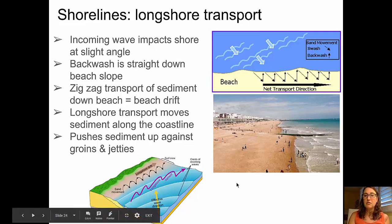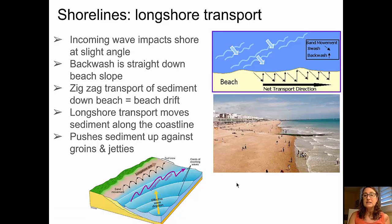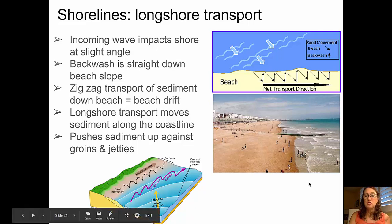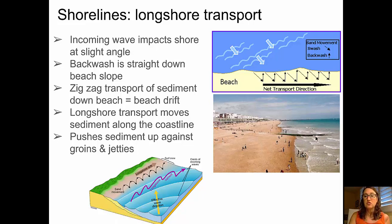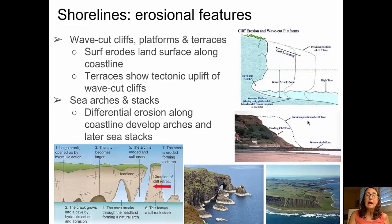A real-world example shows groins built perpendicular to the shoreline to stabilize it. Longshore transport moves sediment toward the top of the picture; past the first groin the beach face comes inland, and toward the second groin it moves back out — indicating longshore transport along the coastline. Erosional features produced by surf action include wave-cut cliffs, wave-cut platforms, and marine terraces.